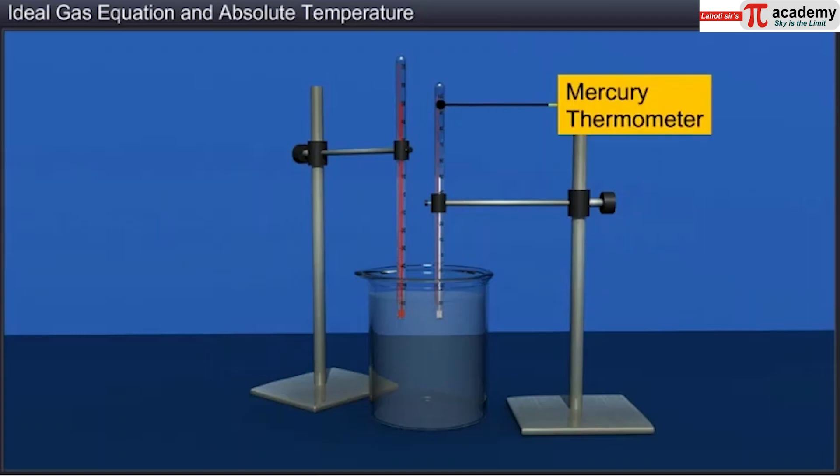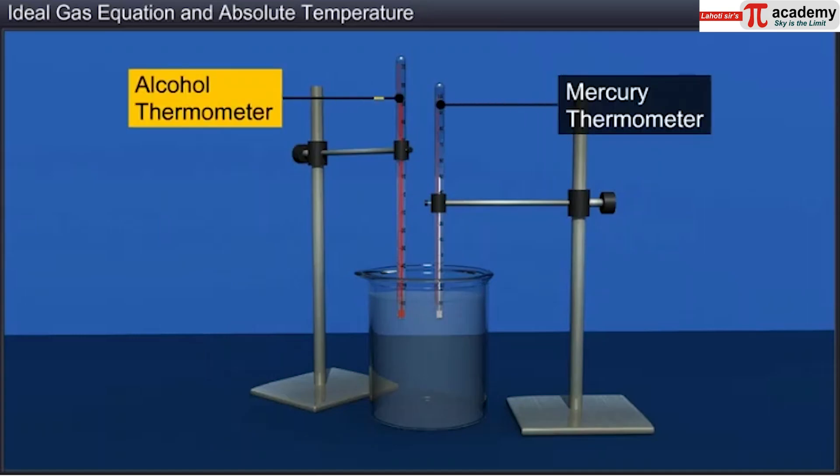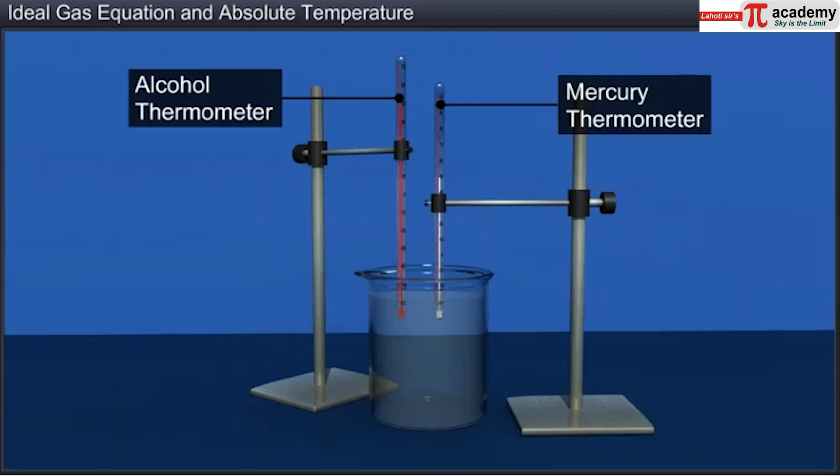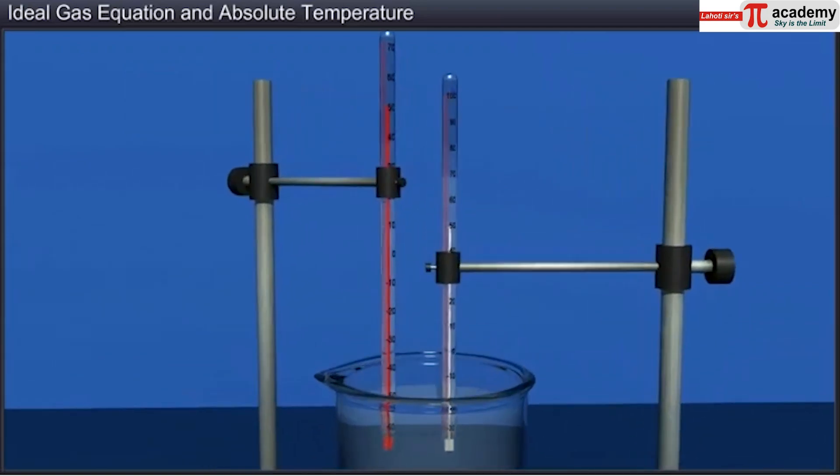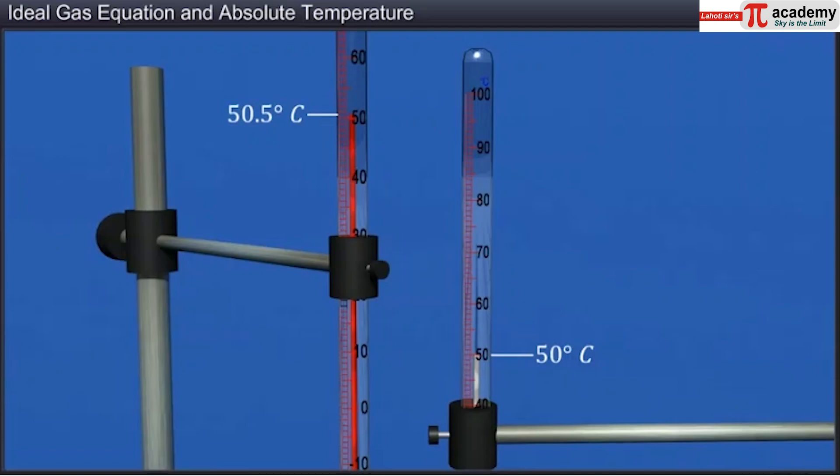When a mercury thermometer and an alcohol thermometer are used to find the temperature of a substance, they may not show the same temperature readings.